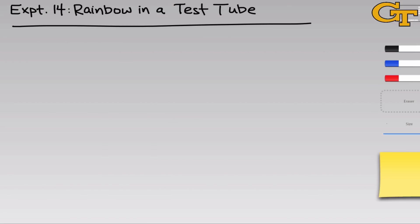Let's begin with some background on the principles underlying the construction of the chemical rainbow. The first one is liquid miscibility. You can think of this term as the liquid-liquid version of solubility — whether two liquids can mix up to form one homogeneous phase or not.